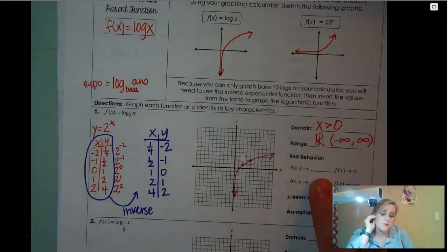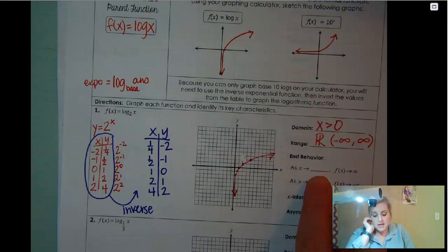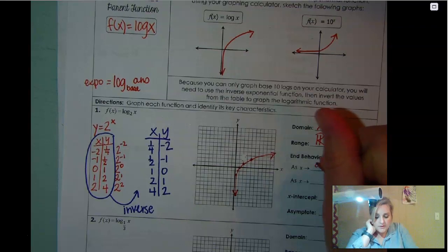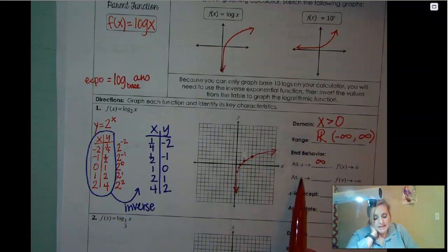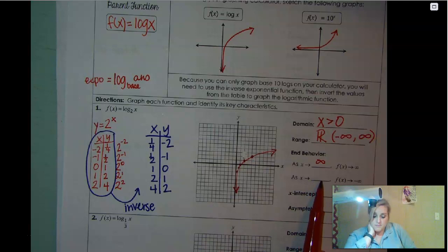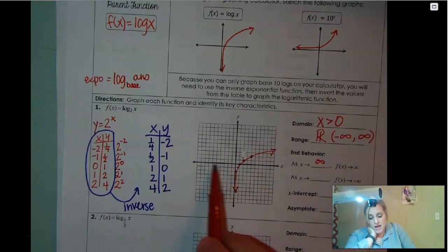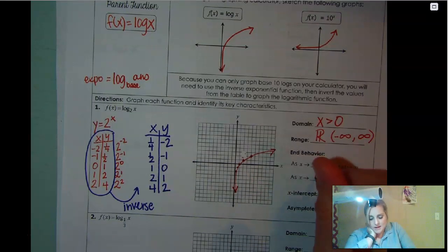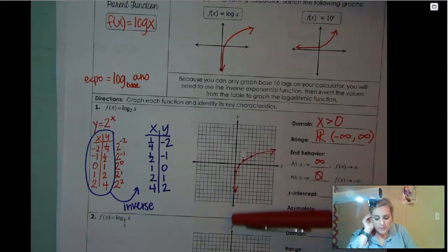End behavior, that's just what's happening to the end behavior. So as x approaches blank, y approaches infinity. So as y is going up, our x is also going to positive infinity. As x approaches blank, the y goes to negative infinity. So as it approaches zero, as x approaches the zero, our y value approaches negative infinity.